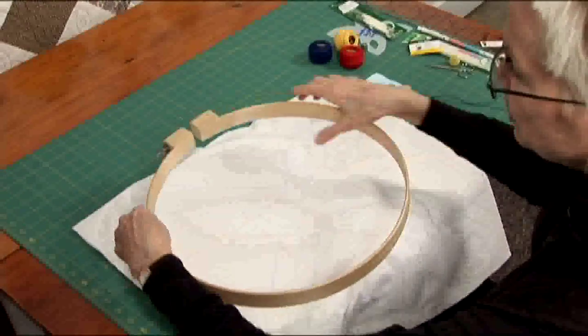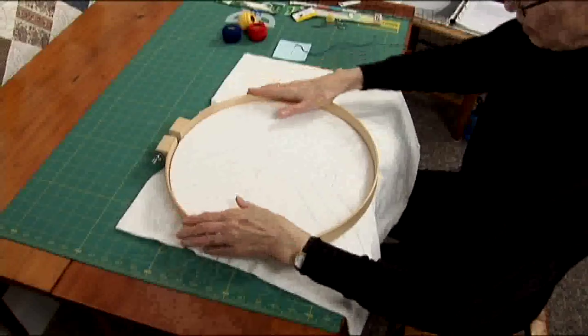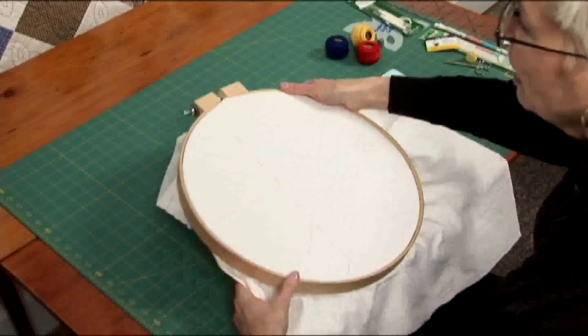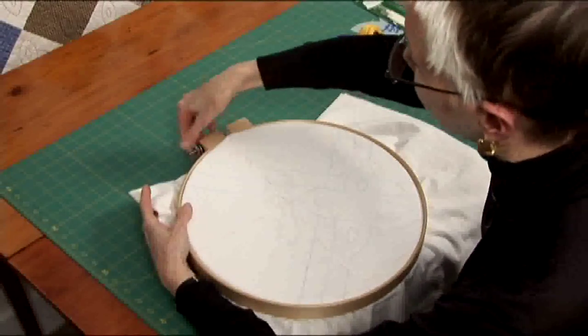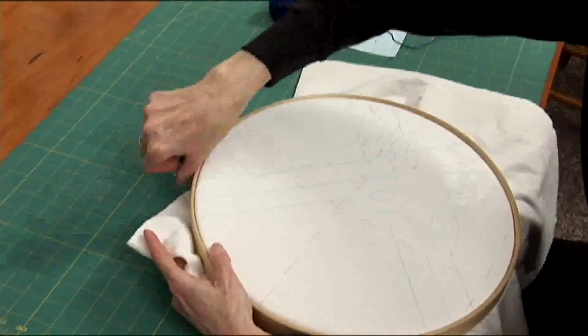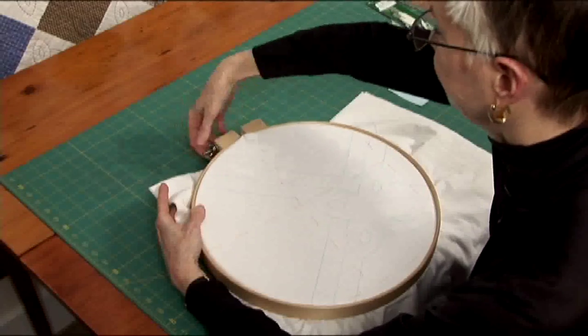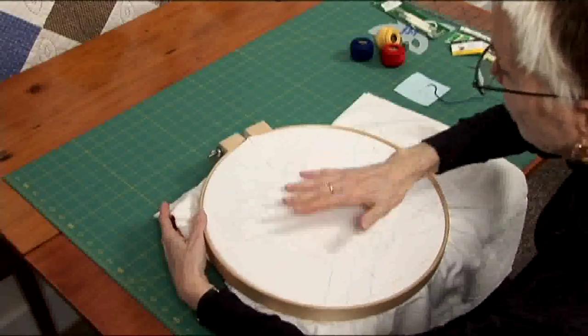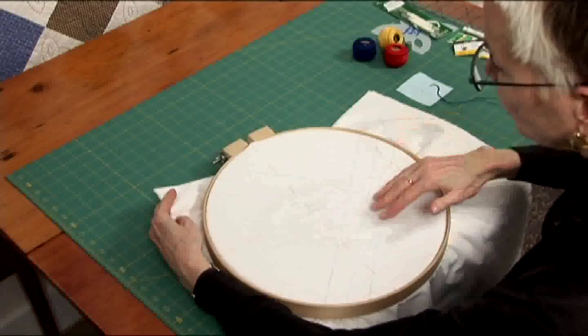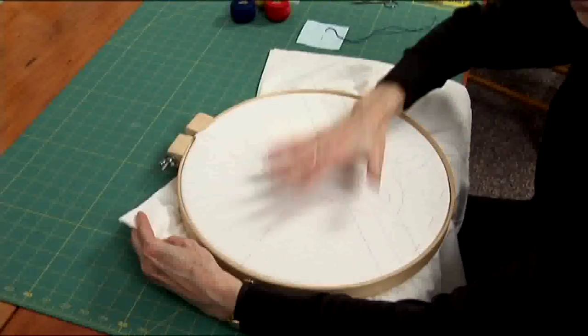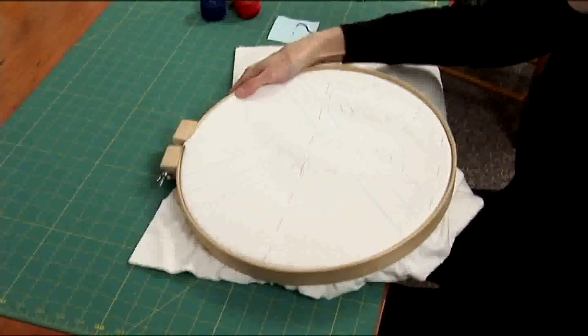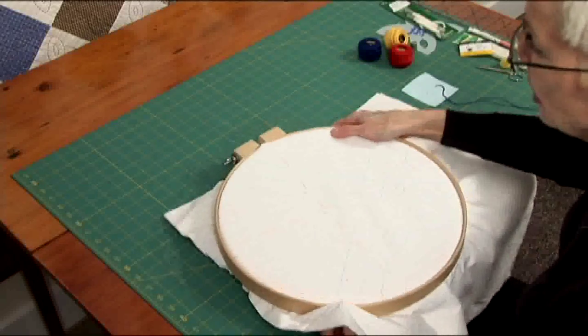The larger circle goes on top and tighten down that wing nut and check the top. You don't want it as tight as a drum, so give it a whack so that there is some play in the quilt top.